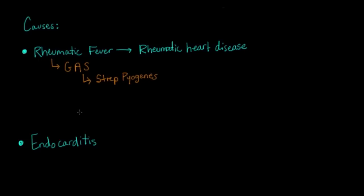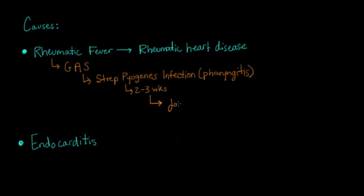This bacteria is actually what causes strep throat. What happens is someone gets a Strep pyogenes infection — a pharyngitis, meaning a throat infection. Two to three weeks later, if it's not treated correctly, the person can actually present with pain in their joints or arthralgias, heart problems like a new heart murmur, and some skin problems.